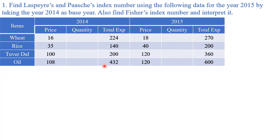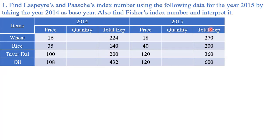The data has items: wheat, rice, edal, and oil. The price and total expenditure were given. Whenever we have a question with total expenditure, we divide total expenditure by price to get quantity. Using price and quantity of base and current years, we calculate the remaining values. This total expenditure is p0·q0 and this one is p1·q1.